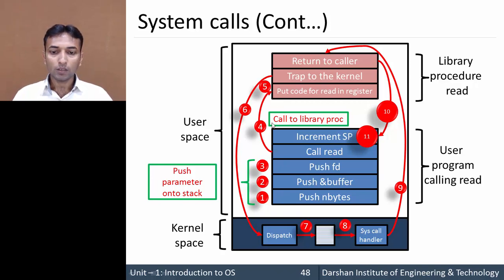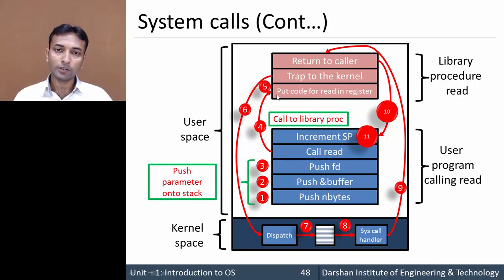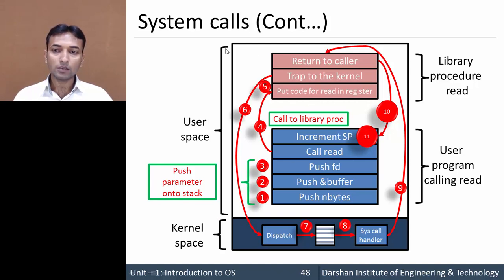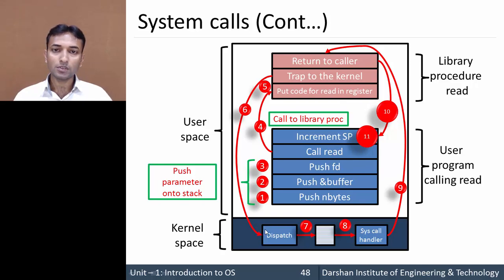Then in step 4, the calling process will call the library procedure, so the call read is invoked. In step 5, it puts a code for reading into the register. This portion is in user mode — the program is right now running in user mode. Now this program requires some services from the operating system or kernel, so it must be moved or switched from user mode to kernel mode. In step 6, it traps from user mode to kernel mode, so the calling process enters kernel mode.